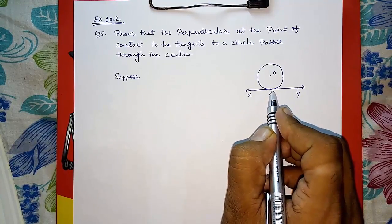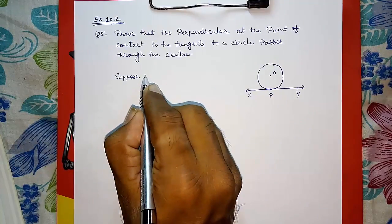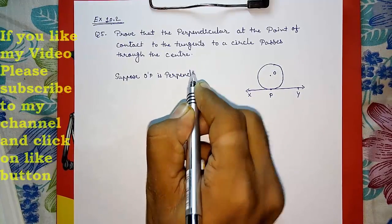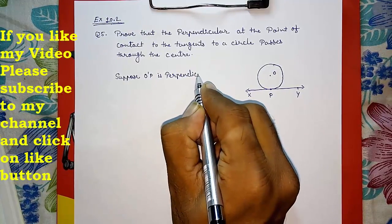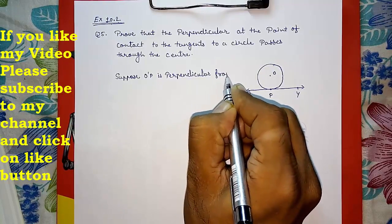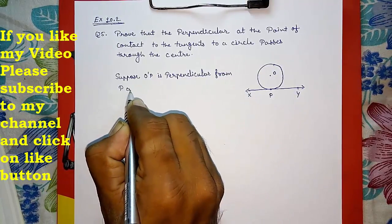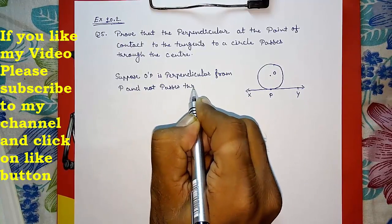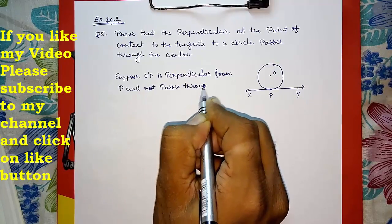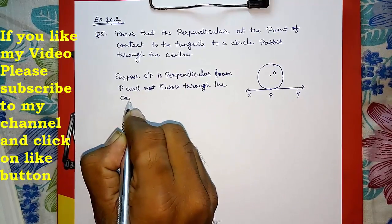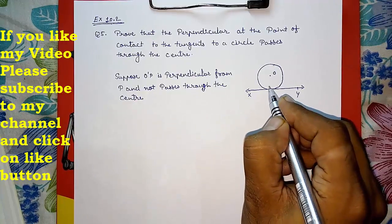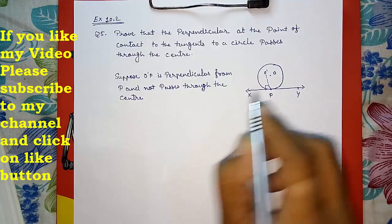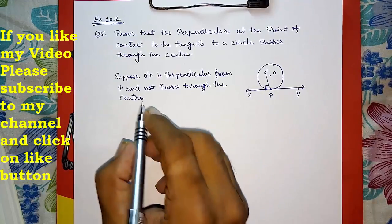Suppose O dash P is perpendicular from P and does not pass through the center. Look here, I am drawing it. O dash P is perpendicular and not passing through the center. So what will I get?